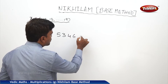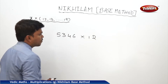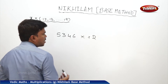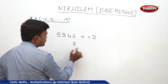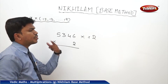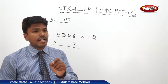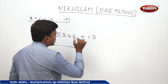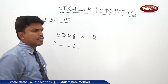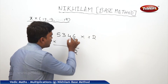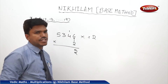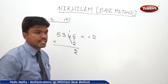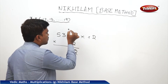Let us take 5346 into 12. Ignore the 1 in 12 and start multiplying with 2. First: 2 times 6 is 12 — drop 2, carry 1. Next: 2 times 4 is 8, plus carry 1 is 9.